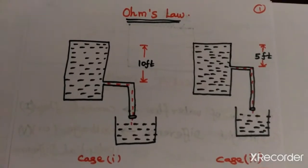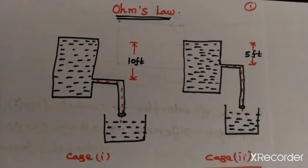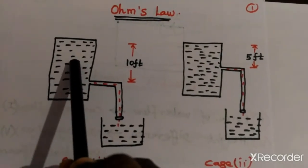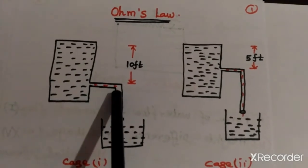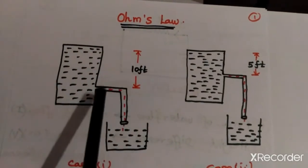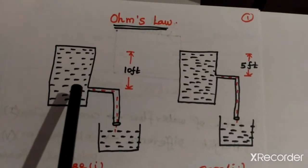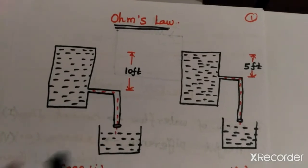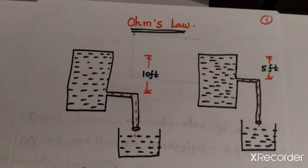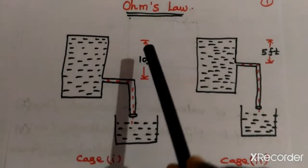For a better understanding of Ohm's Law, I am taking the water and pipe analogy. We are taking three parameters in this analogy: water is filled in a tank and transferred to a container through a pipe. The three parameters are the height difference between the top of the tank and the pipe, the diameter of the pipe, and the force of water flowing through the pipe. These parameters are related to the parameters used in Ohm's Law.